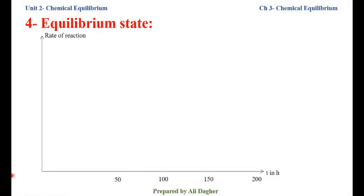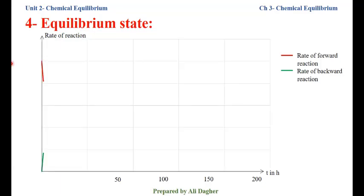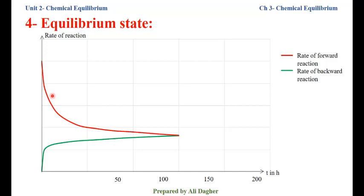This graph shows the variation of the rate of the forward reaction and the backward reaction with time, from the beginning until the equilibrium state. The red curve represents the rate of the forward reaction, while the green curve represents the rate of the backward reaction. At the beginning, the rate of the forward reaction is maximum while the rate of the backward reaction is zero. The rate of the forward reaction decreases and the rate of the backward reaction increases. This continues until a moment where the two rates become equal and equilibrium is established.